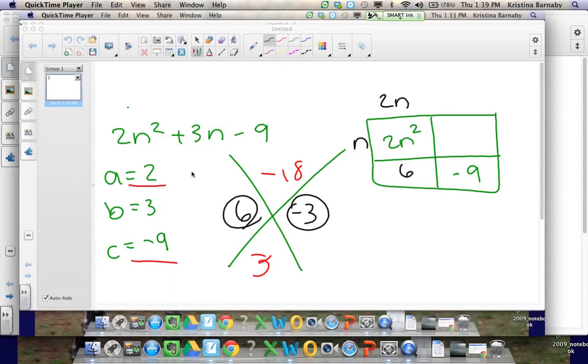So I'm going to put the 6 here and the negative 3 there. 2 times 3 will get me to the 6, and n minus 3 will get me to the negative 3n.